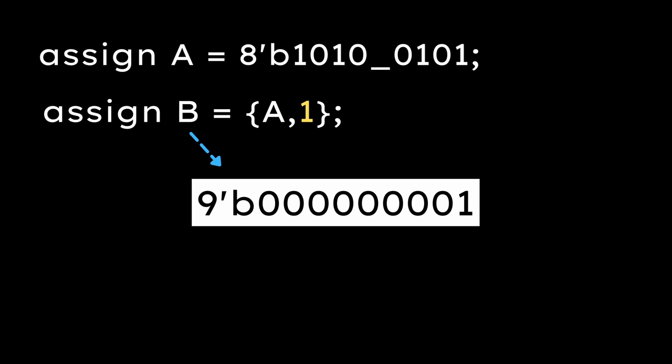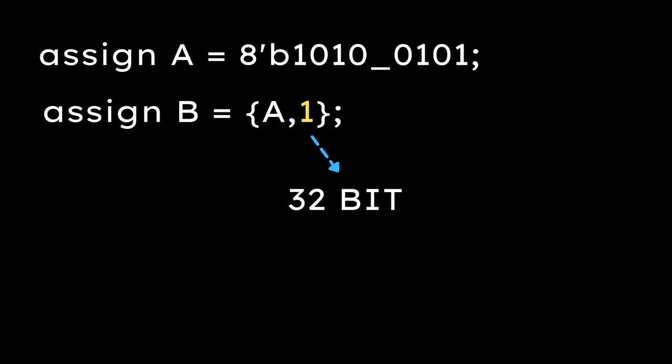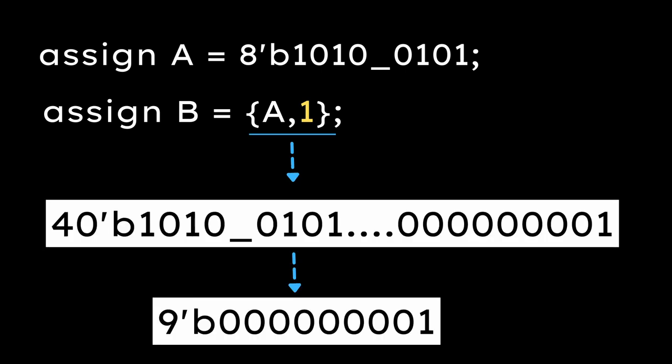So B will be 9'b, 8 zeros and 1. Here's the catch. As 1 is 32 bit wide and A is 8 bit, simulator will concatenate both of them and we will get a result of 40 bit which is later truncated to 9 bit as B is 9 bit. And 9 bit is what? 8 zeros and 1. So, B is 1.